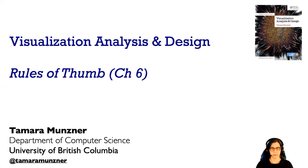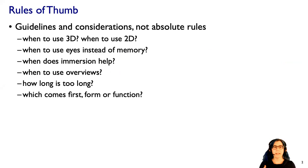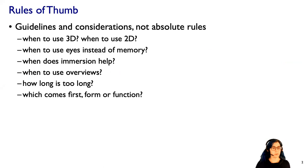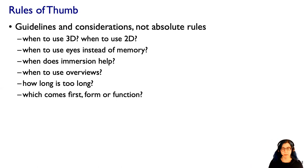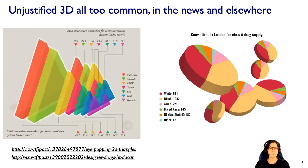Let's talk about rules of thumb in visualization, analysis, and design. When I say rules of thumb, I mean guidelines and considerations — not absolute rules set in stone, but things to be aware of as you think about major design issues. Topics include when to use 3D versus 2D, when to use your eyes versus internal memory, when immersion might help, when to use overviews, how long is too long waiting for system response, and whether form or function comes first.